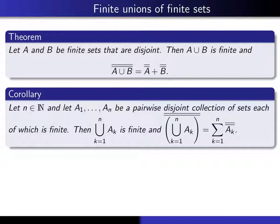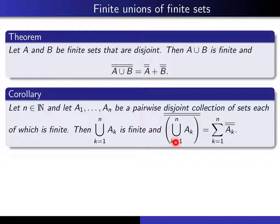Now, instead of just two sets, suppose you give yourself any finite number of sets — it could be one, two, or a hundred. We assume they're all pairwise disjoint, meaning any two of them have no elements in common. Then the same reasoning applies: when you take the union, you're throwing all elements into one big box, so not only do you get a finite set, but the cardinality of the union is just the sum of the cardinalities of the individual sets.